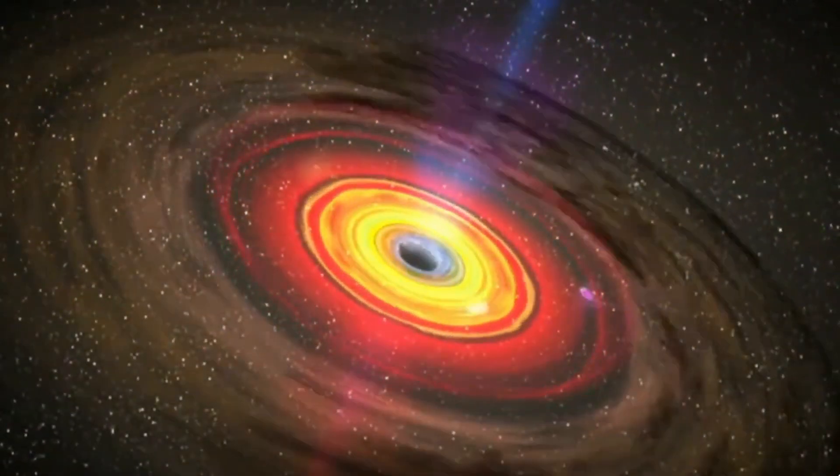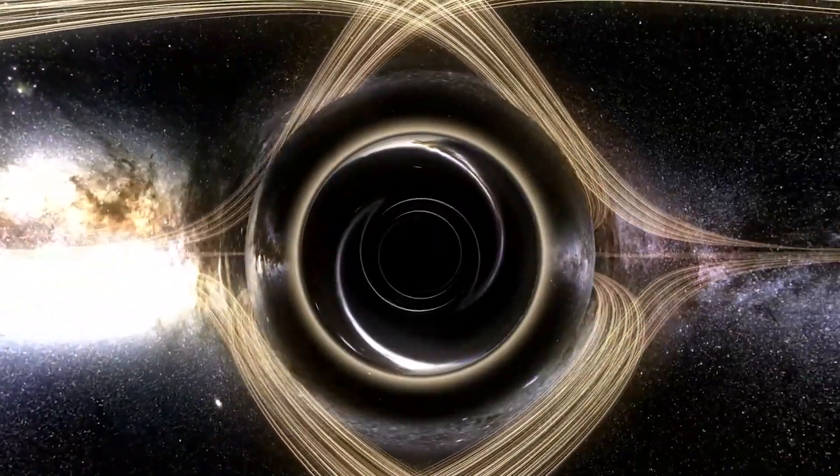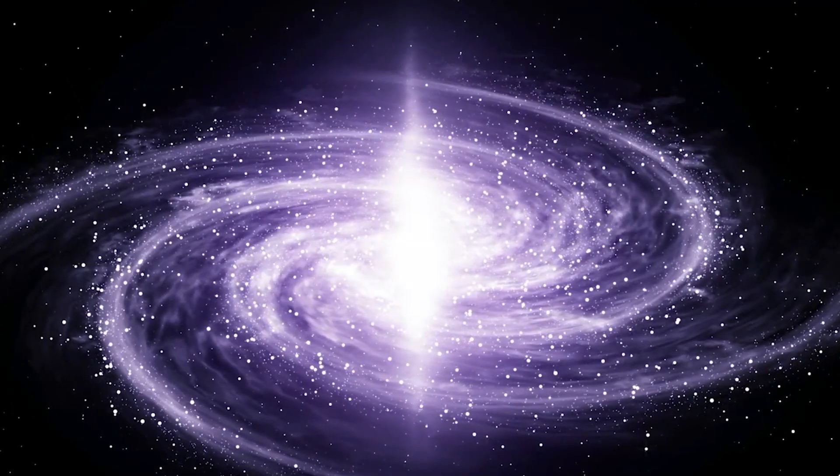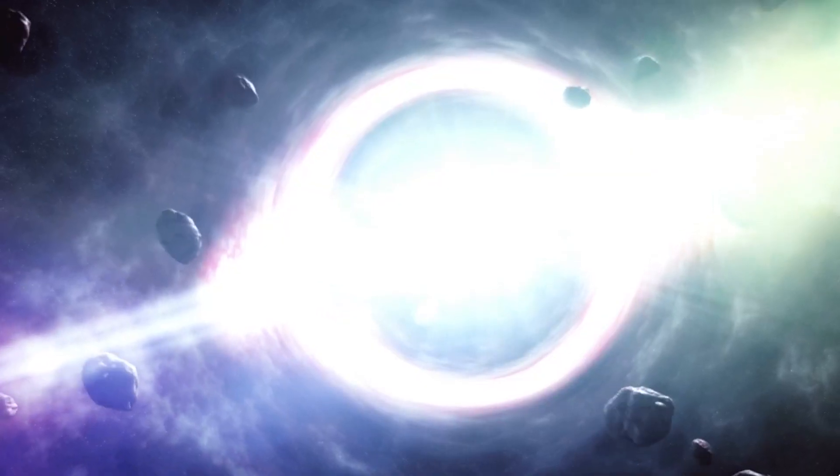A halo of dwarf galaxies encircles it, illuminating its dynamic history of cosmic mergers. Throughout the ages, stars from these smaller galaxies have melded with Andromeda, leaving behind captivating patterns in its stellar orbit.